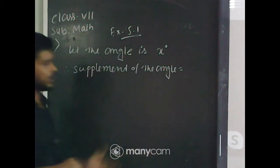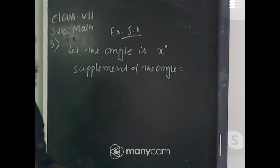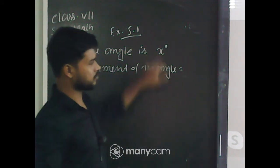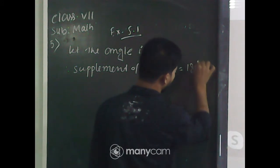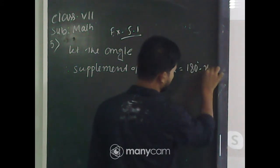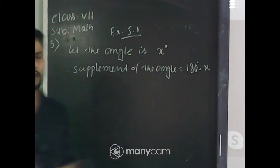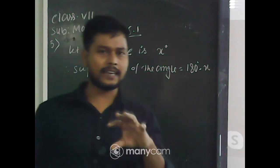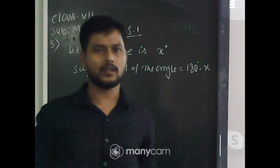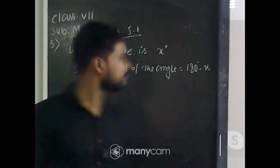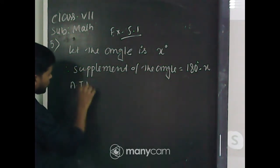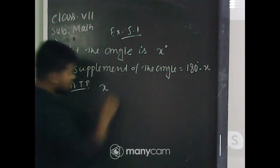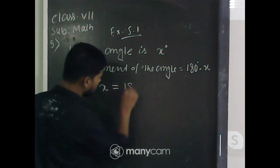Can you tell me what is the supplement of angle x? It is 180 minus x — very good, 180 degrees minus x. Now, according to our problem, it is given that the angle is equal to its supplement angle. That means, according to the problem, angle x is equal to its supplement.